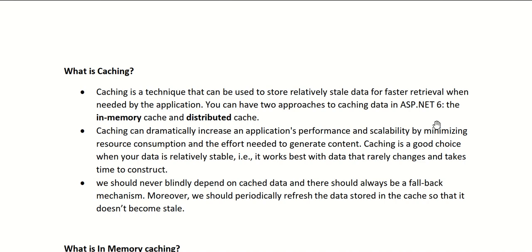Caching is a technique that can be used to store relatively stale data for faster retrieval when needed by the application. You can have two approaches to caching data in ASP.NET Core: in-memory cache and distributed cache. Caching can dramatically increase an application's performance and scalability by minimizing resource consumption and the effort needed to generate content.